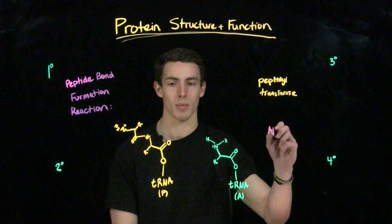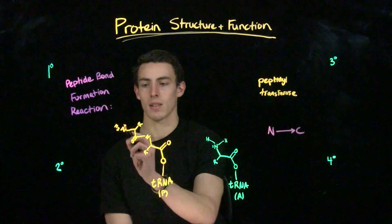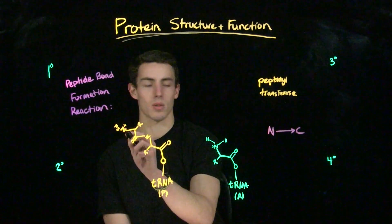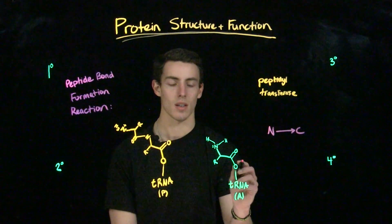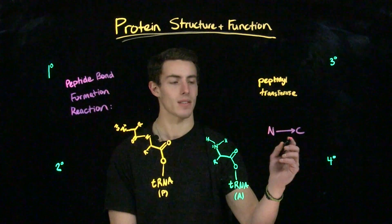It's going to go from the N-terminus to the C-terminus. That is, we're going to extend from this nitrogen group, or the amino terminus, to the C-terminus, or the carboxy terminus. And thus, our amino acid chains are going to have polarity.